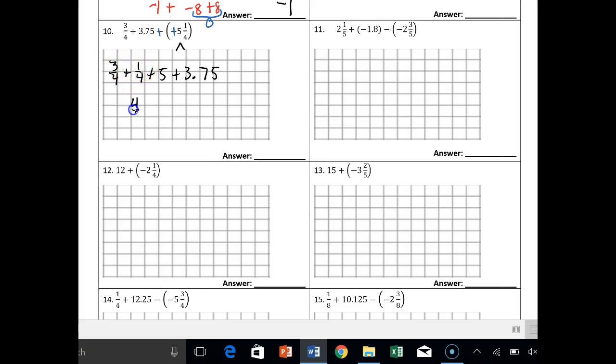So 3 plus 1 is 4 fourths plus 5 plus 3.75, and that's 1 plus 5 plus 3.75. 4 divided by 4 is 1. 1 plus 5 is 6 plus 3.75 and it becomes nice and clean in the end, it's 9.75.